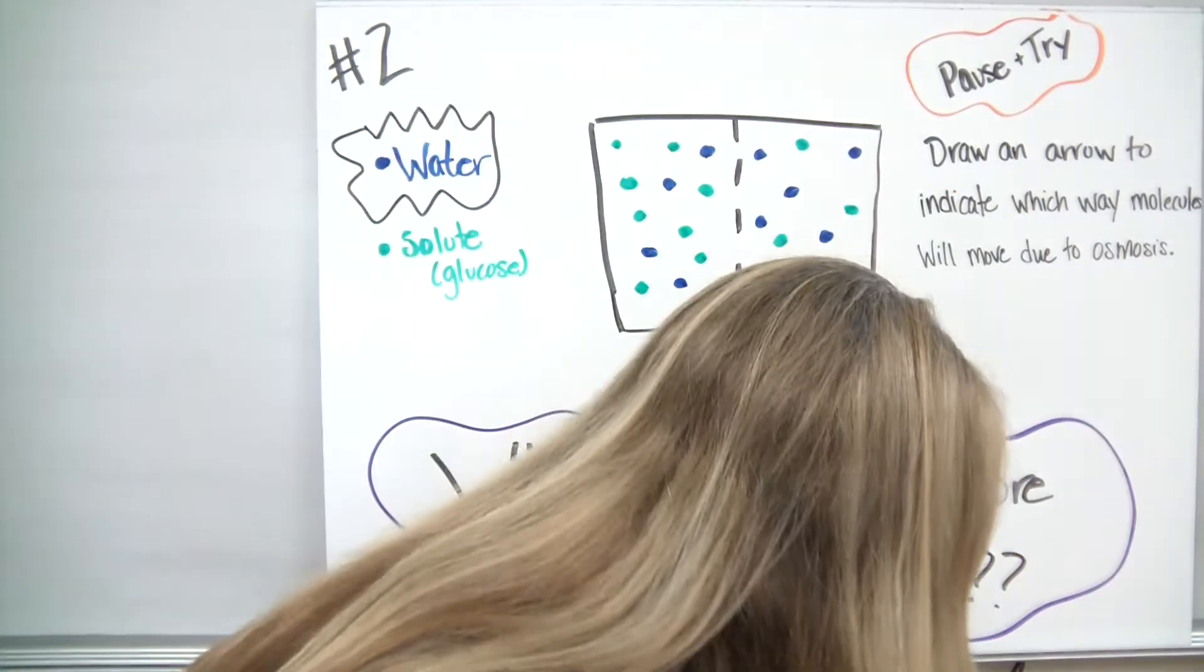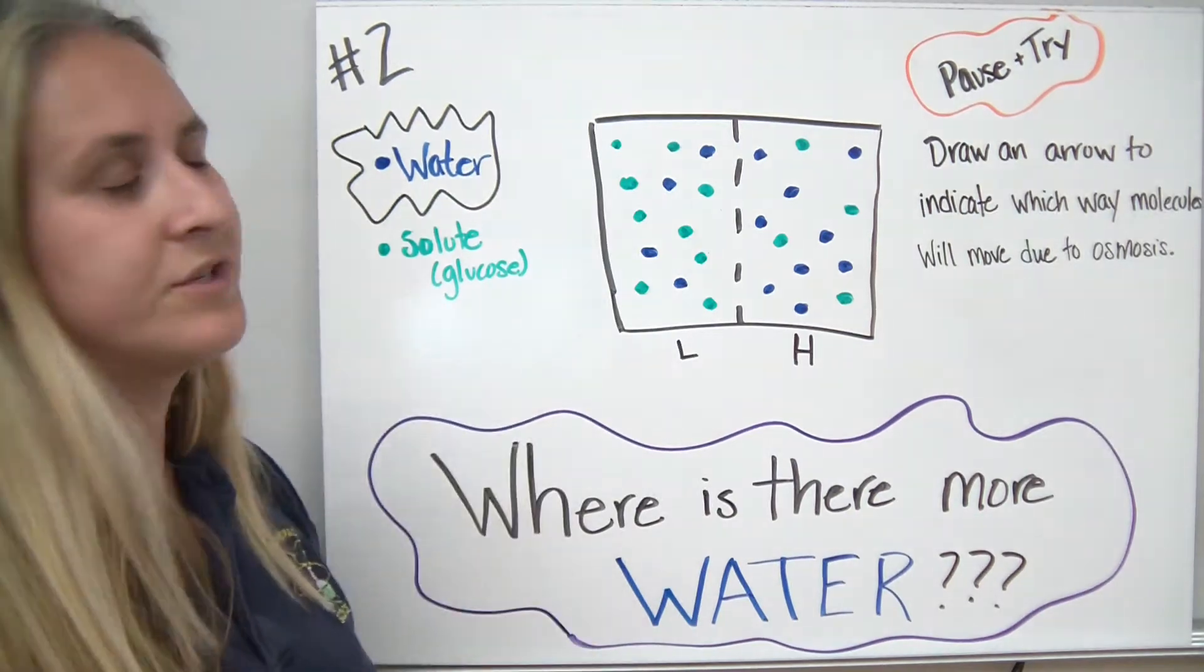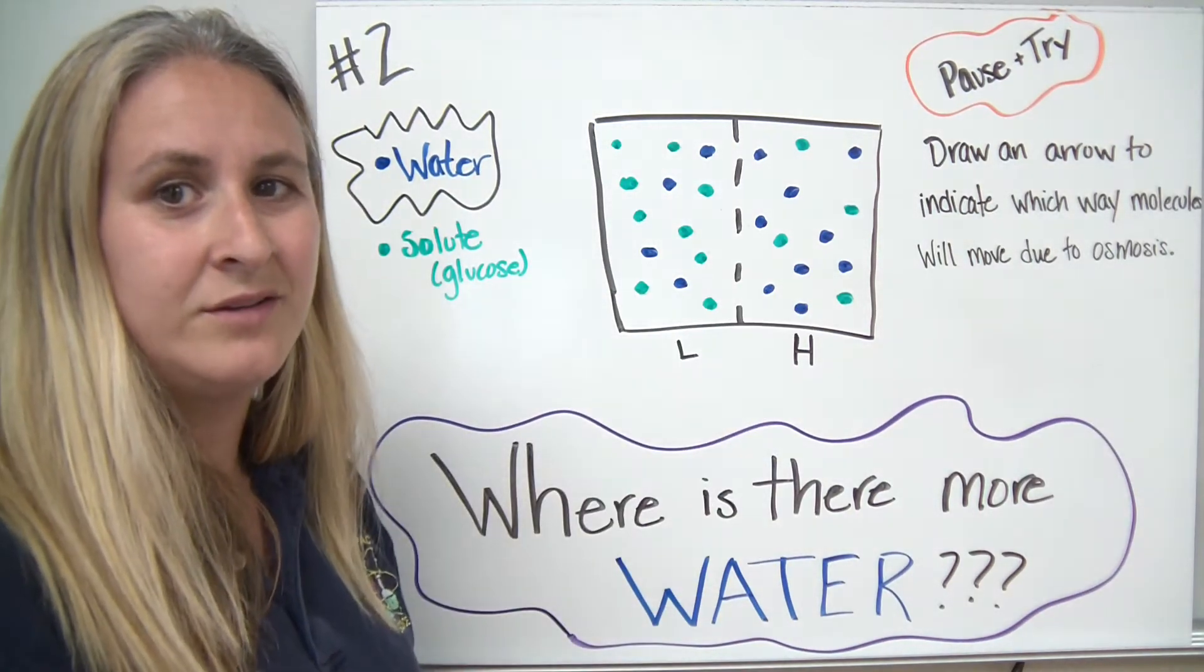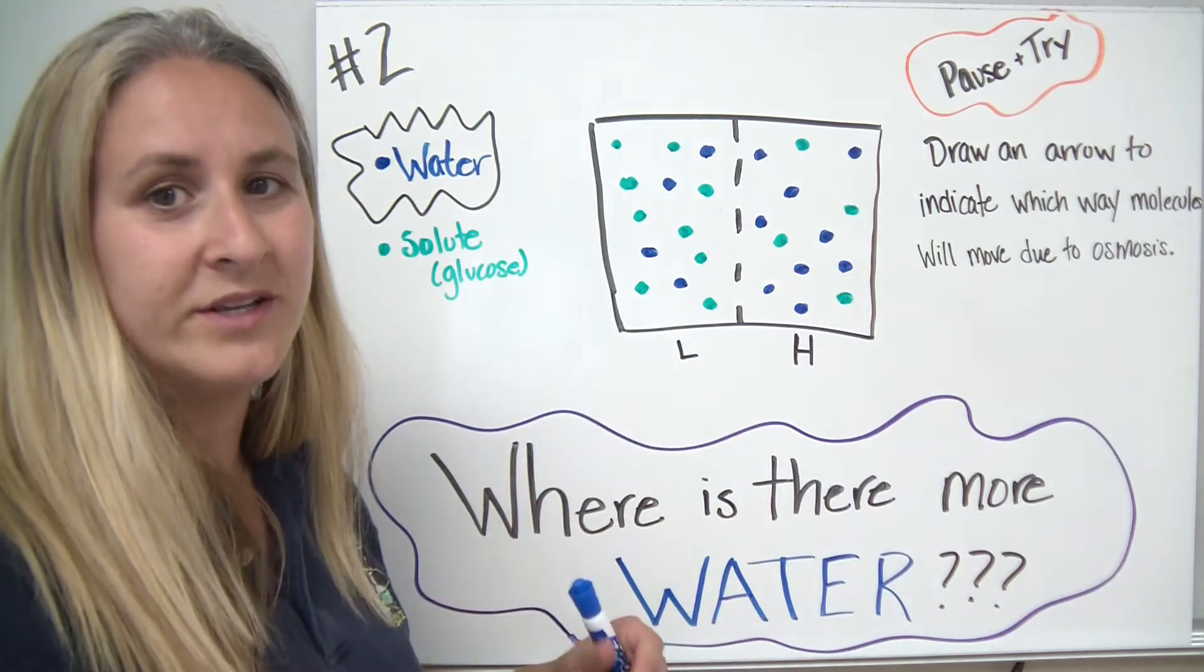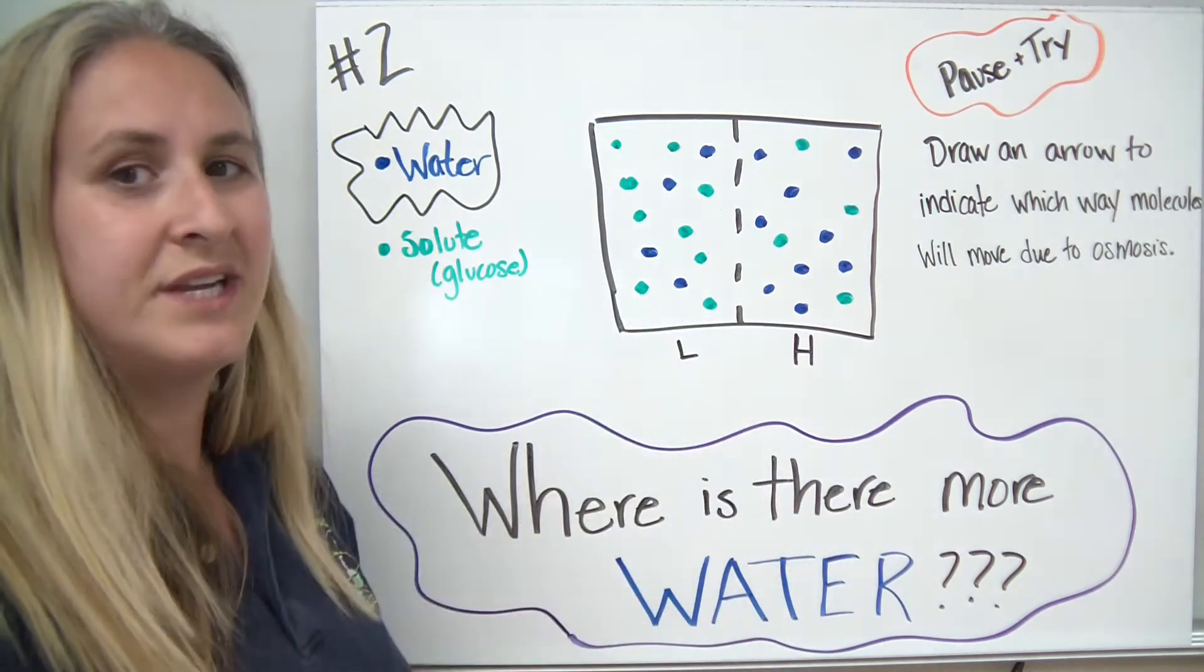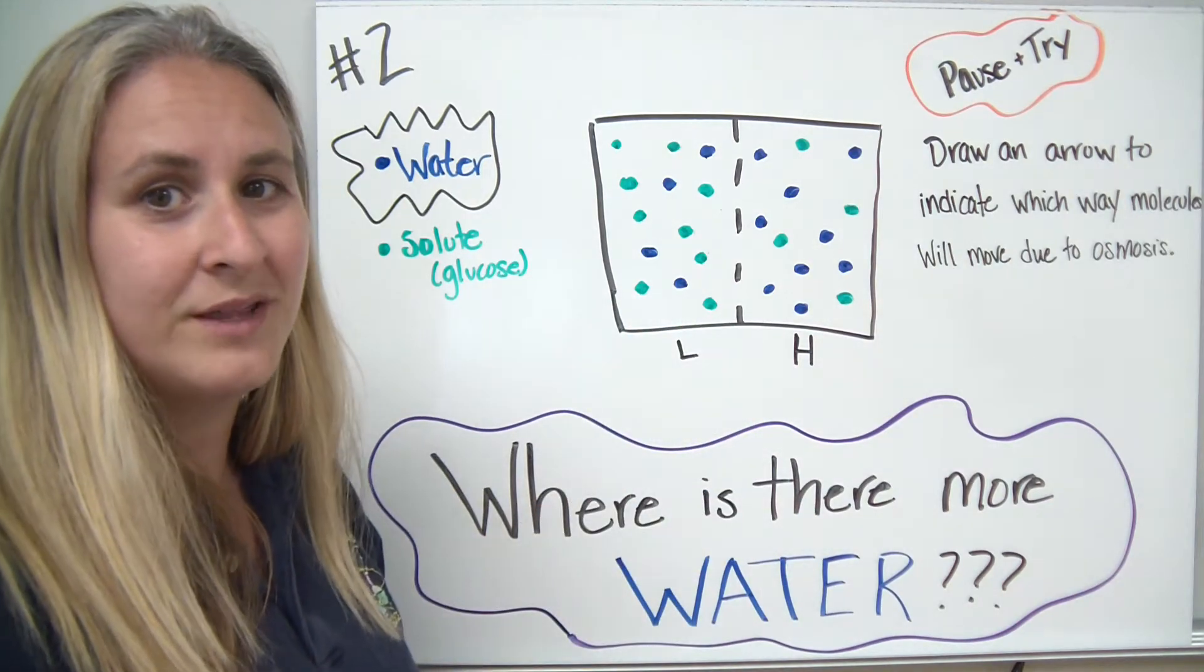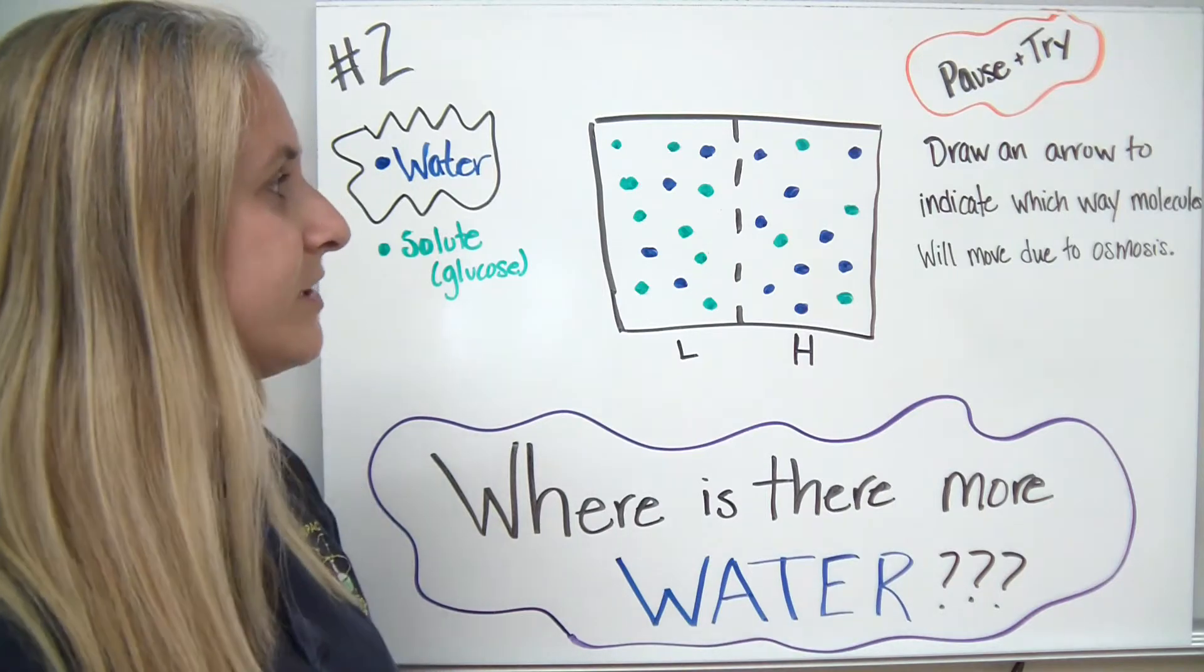On the diagram that we have here, we have our water and our solute again. I'd like you to take a look at the model and do the same thing. Count the molecules, find where there's more water, and use an arrow to indicate which way the molecules would move.